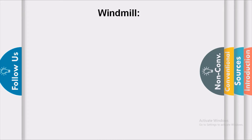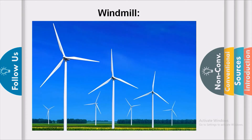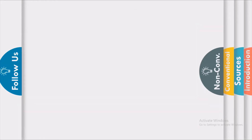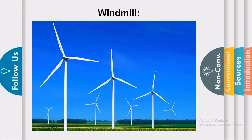A windmill is just like a larger fan at some height. Wind causes the blades to rotate, which in turn rotates the turbine of the electric generator and electric energy is produced. The output of a single windmill is small and does not produce much electricity. Therefore, a large number of windmills are erected over a large area to produce electricity, and these are known as wind energy farms.